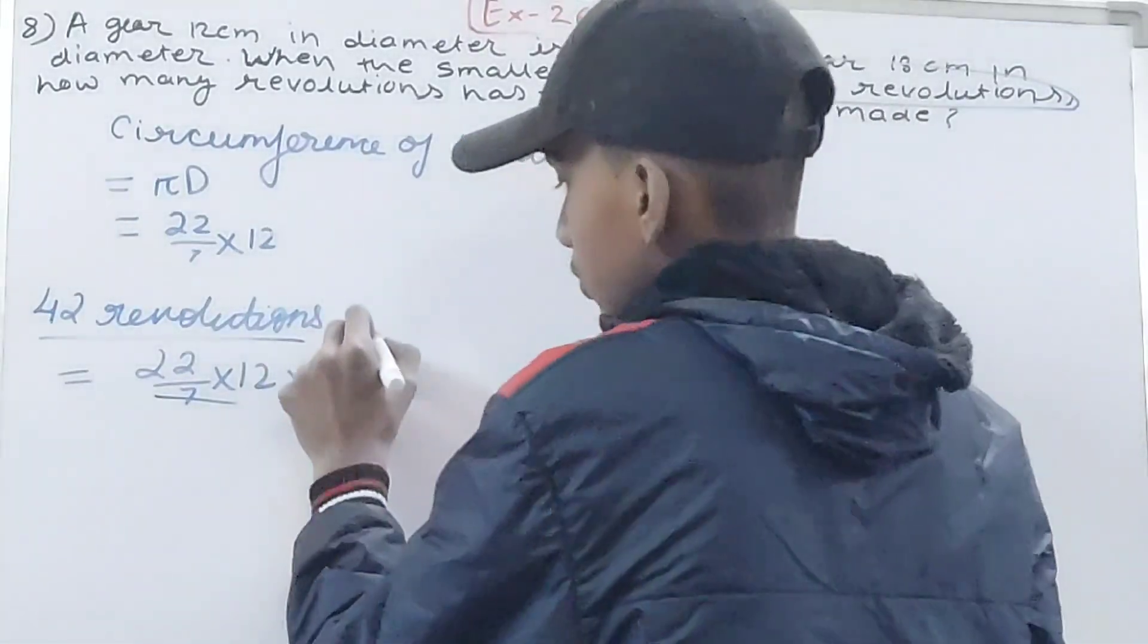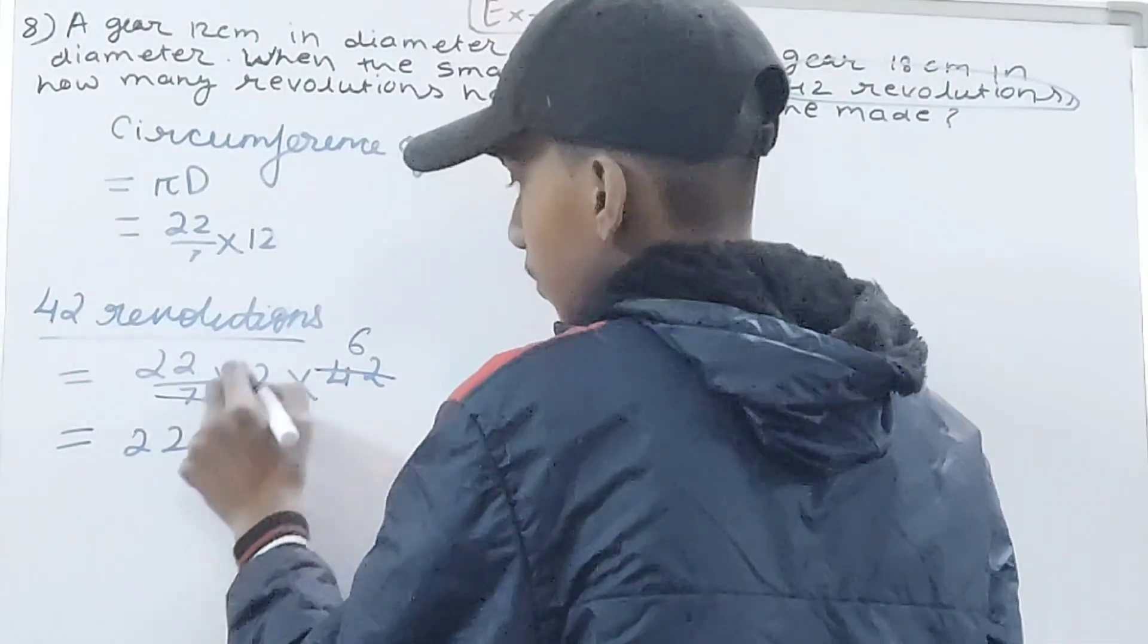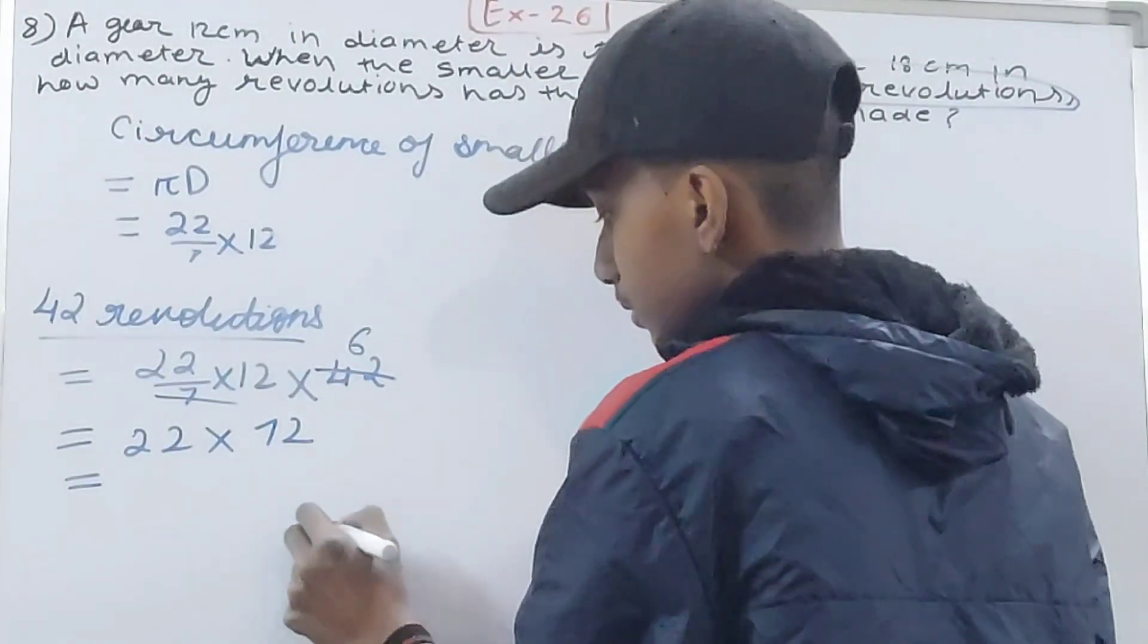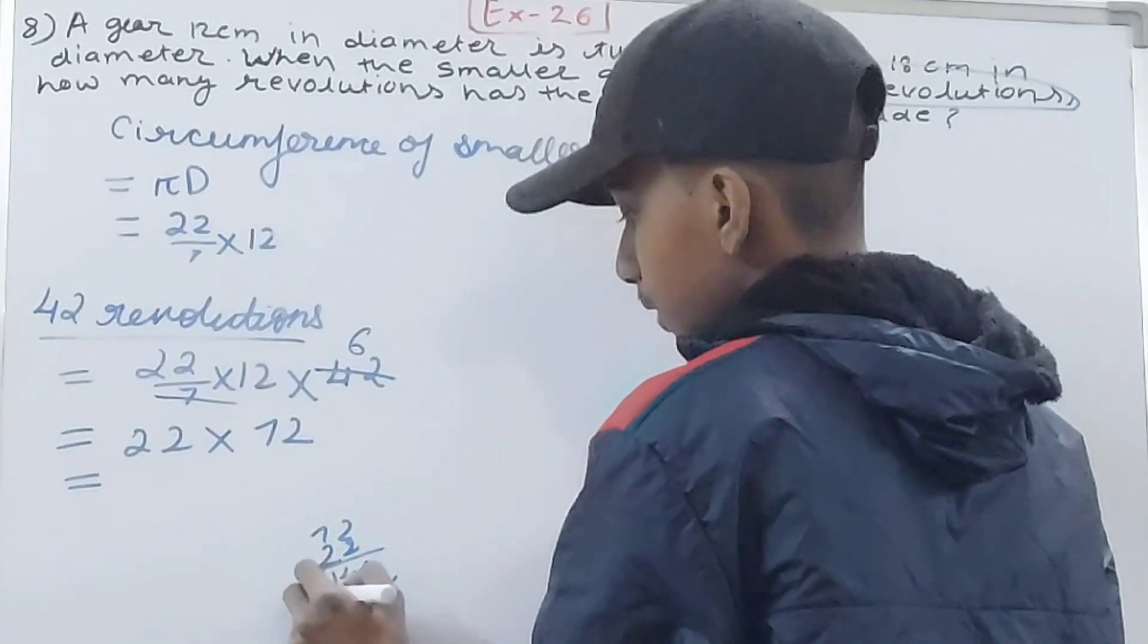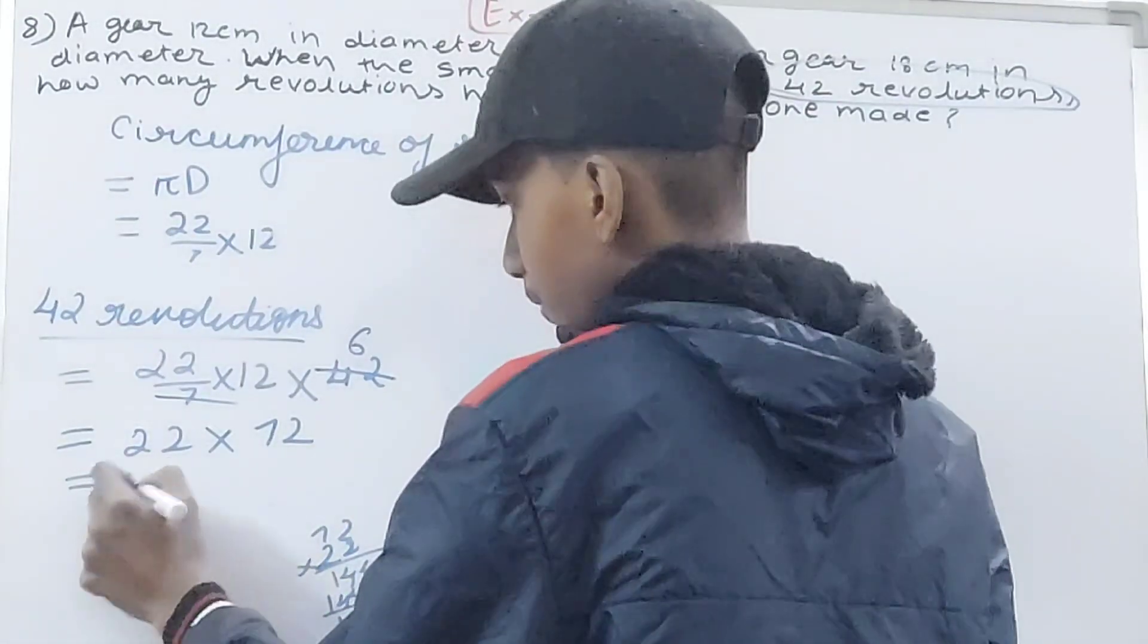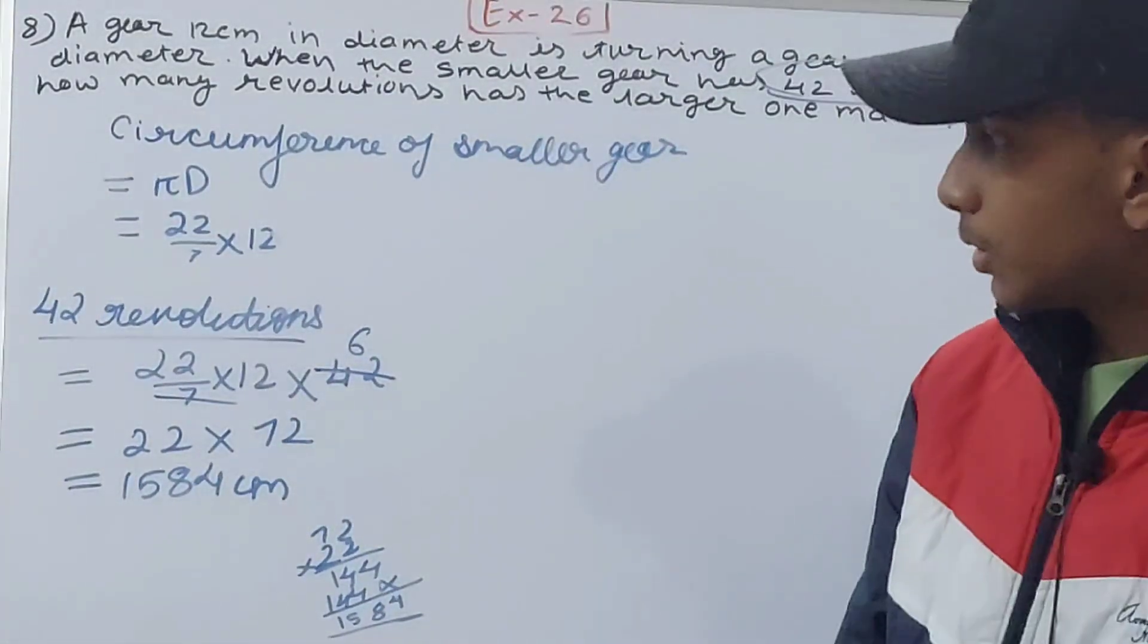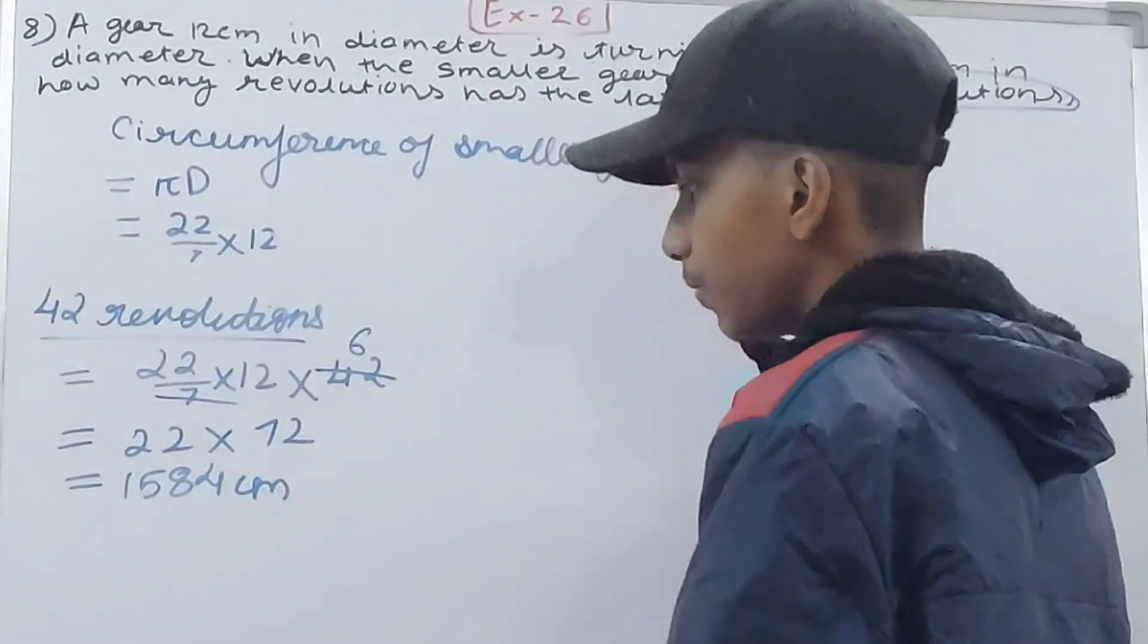That will cancel, and this goes six times, so we have 22 × 12 = 72. Let's multiply: 22 × 72 = 1584 centimeters. That means this is traveling 1584 centimeters in 42 revolutions.